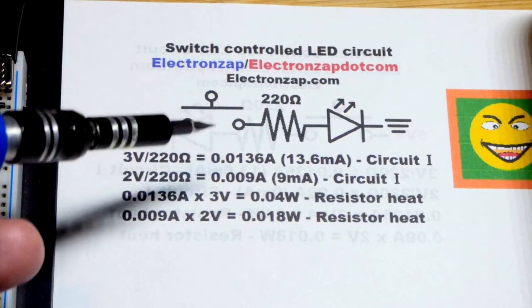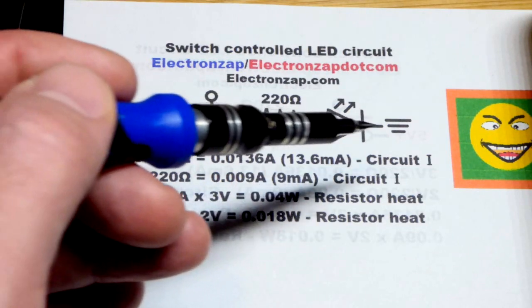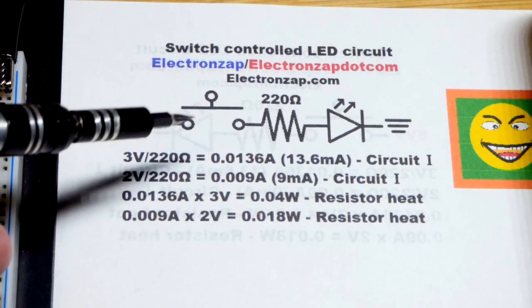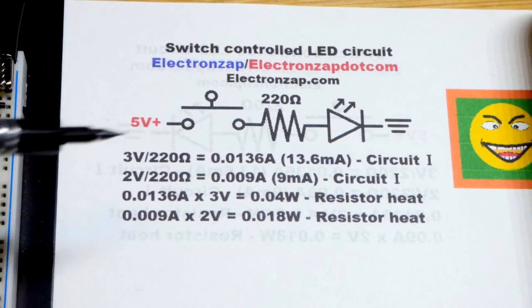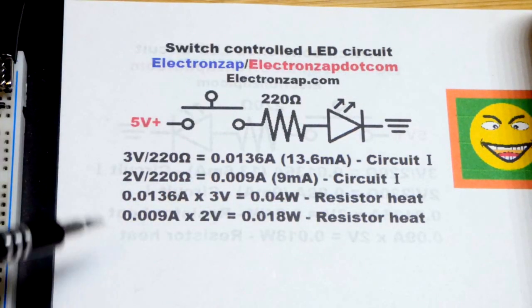The same amount of current when you close the switch has to pass through the three components. When the switch is open, you still have the same current. It's just nothing. And that's the way it is in series. Current has to flow through them equally.